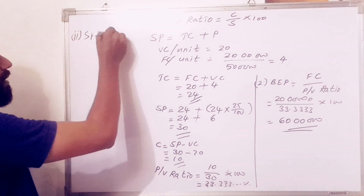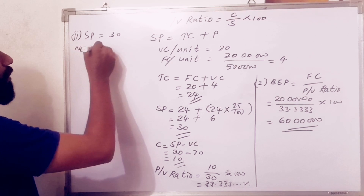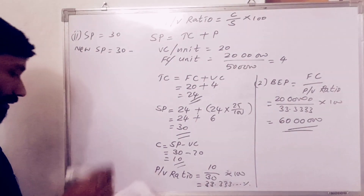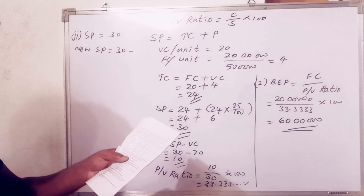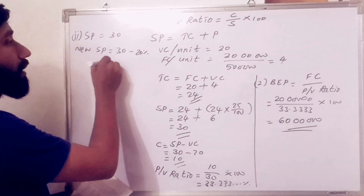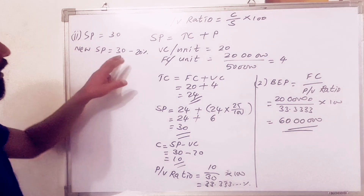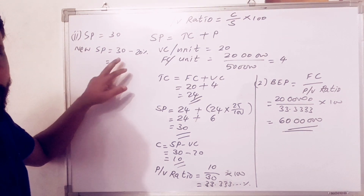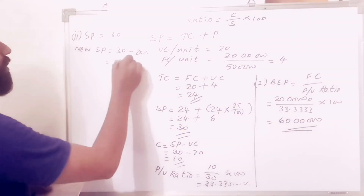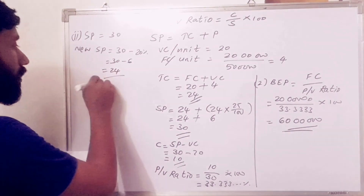Now the selling price is Rs 30. The new selling price is reduced by 20%. 20% of 30 is 6. So new selling price is 30 minus 6 equals Rs 24.